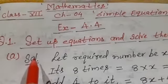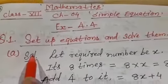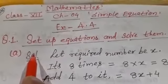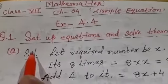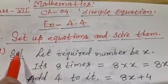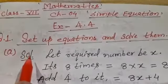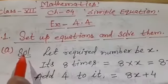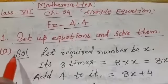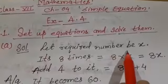Today I am going to solve Exercise 4.4, the first part of this exercise. The chapter is Simple Equations. Question number one: set up equations and solve them. The question is: add 4 to 8 times a number and you get 60. You can see this question from the NCERT book. Let the required number be x.